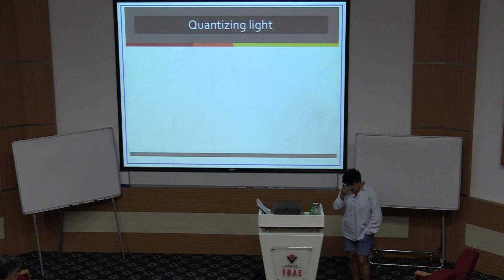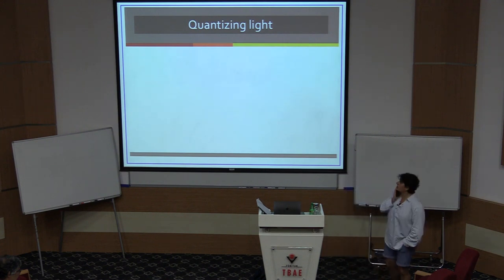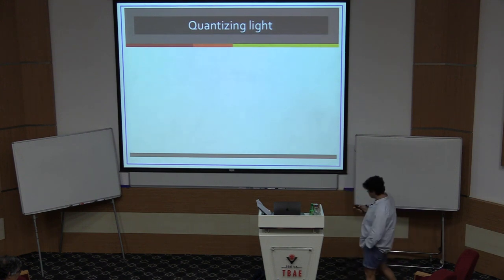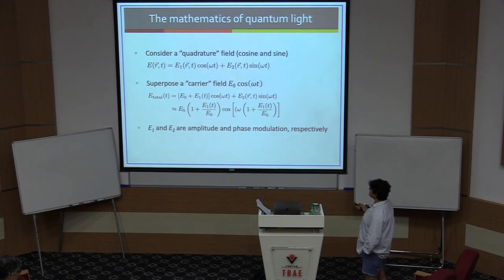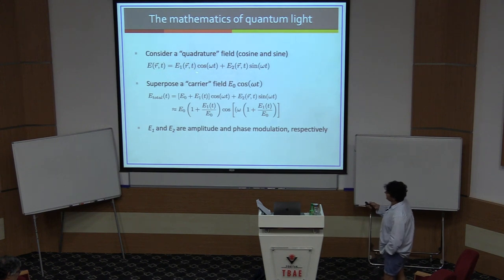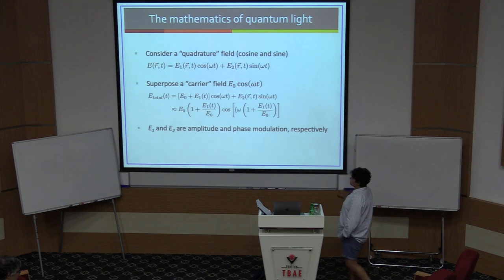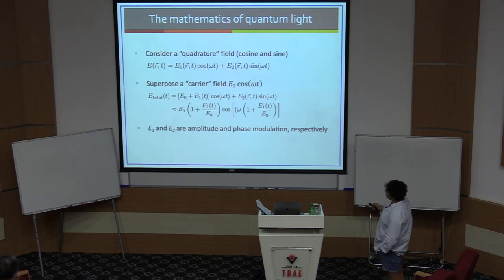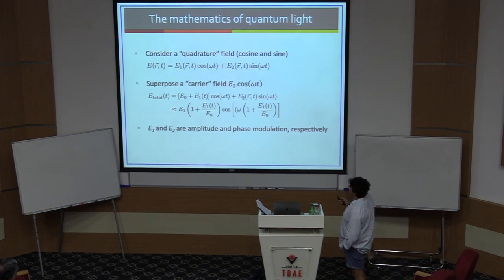To be able to do this, I have to give you a tutorial on how we quantize light. The first thing we do in quantizing light is start with a classical field. This classical field can be written in terms of sines and cosines, with the r vector containing all the spatial dependence of the light. This is sometimes called a quadrature field — anytime you see the word quadrature, it simply means expressing something in terms of sines and cosines.